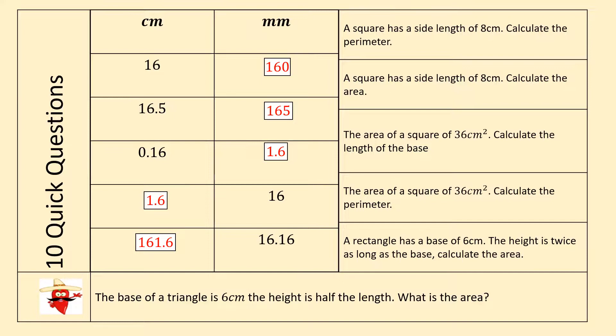The conversions should look like this. So we hopefully remembered that there are 10 millimeters in every centimeter. Now, these square problems we'll look at one at a time. Square has a side length of eight centimeters. Calculate the perimeter. Well, that means we've got four sides to add together or four lots of eight to make 32 centimeters. Square has a side length of eight. Calculate the area. This time we're multiplying two dimensions together. Eight multiplied by eight to give us 64 square centimeters. If you're missing any of the units, make sure to add them in.